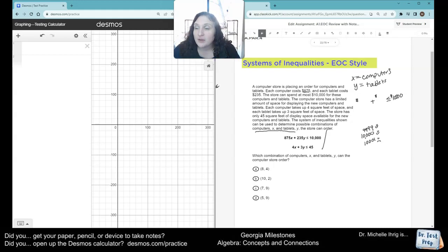So we know that computers are X, tablets are Y, computers cost $875, and tablets cost $235. All right, that's how they gave you that formula. That's where it came from.